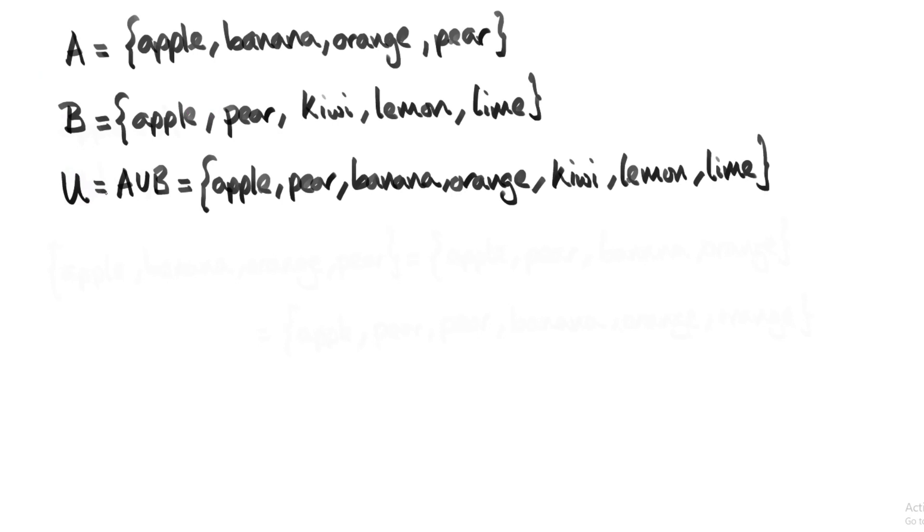Notice that although apple and pear appear both in set A and B, they only appear once in the union. Even if I did happen to write them twice, we know that a set with repeated elements and a set without are the same.